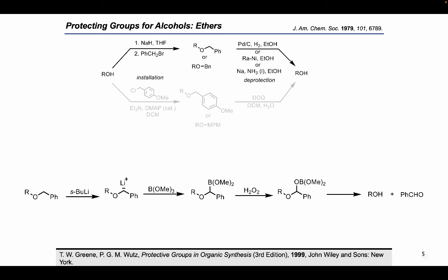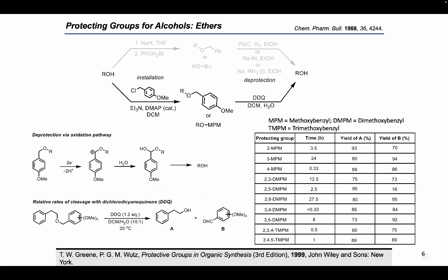Hydrogenolysis of secondary and tertiary benzyl ethers can be sluggish. Protection of alcohols using benzyloxymethyl chloride produces corresponding methoxybenzyl ethers which are cleaved more readily than the corresponding benzyl ethers. These groups can be removed oxidatively using DDQ. The reaction proceeds through a benzylic cation, and the methoxy substituent is necessary to facilitate the oxidation. The ease of removal can be increased by further addition of a methoxy group, as summarized in the rate of cleavage table. These reaction conditions do not affect most other common hydroxy protecting groups and are therefore useful in synthetic sequences that require selective deprotection of different hydroxy groups.